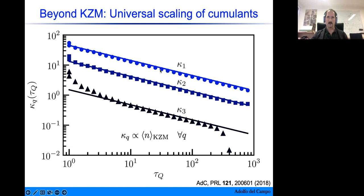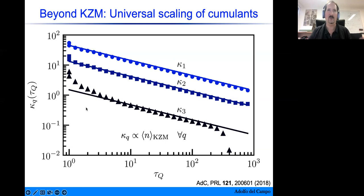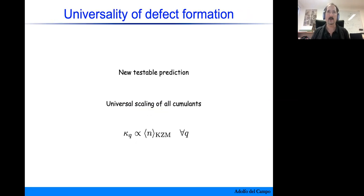The cumulants are shifted by numerical prefactors as illustrated, and there are deviations at both extremes. For finite system sizes, there is always a quench time when one starts to probe the onset of adiabatic dynamics, because the defect number is very low and the coherence length is of the order of the system size. Deviations also appear when going very fast, because the Landau-Zener formula is used to estimate the predictions, and it only works well when quenches are sufficiently slow. The new prediction is clear: all cumulants scale proportionally to the mean and therefore inherit the Kibble-Zurek power-law scaling.